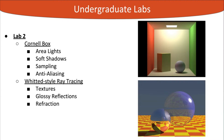The second lab covers more advanced topics: the Cornell box is extended with area lights, soft shadows, sampling and anti-aliasing. Finally, we set up a Whitted-style ray tracing demo scene implementing procedural textures, glossy reflections and refraction. We emphasize that all these effects are very hard to implement in rasterization, and how ray tracing allows us to generate these images in an elegant manner.